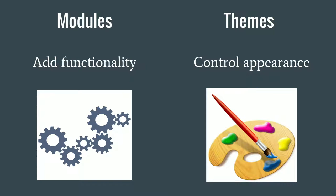Modules are responsible for adding functionality to the website, and themes control appearance. For example, if I want a tweet automatically sent every time I write a blog post — that is functionality, provided by a module. On the other side, if it's something visual — font size, colors, or how the layout behaves on a smartphone or desktop — anything to do with appearance is controlled by the theme. There is a very clear separation of responsibilities.